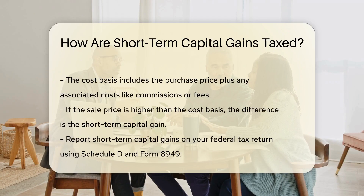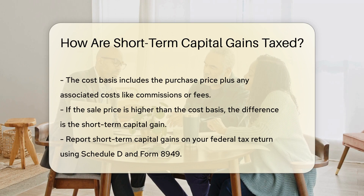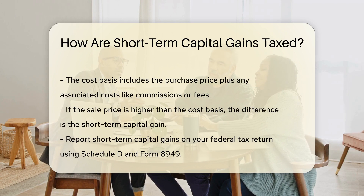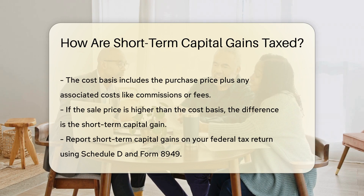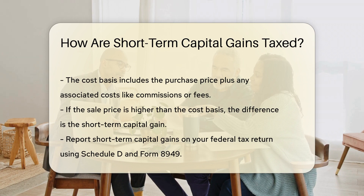To calculate short-term capital gains, you subtract the cost basis of the asset from the sale price. The cost basis is generally the purchase price plus any associated costs, such as commissions or fees. If the sale price is higher than the cost basis, the difference is your short-term capital gain.